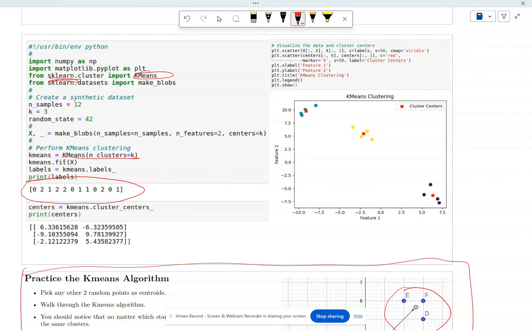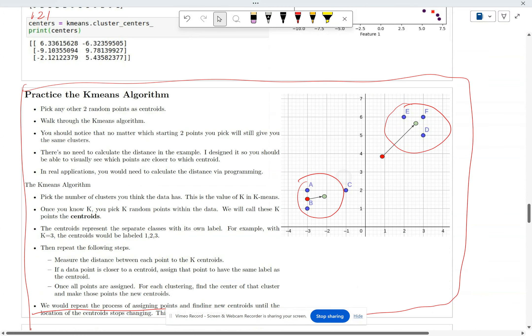How do you know how well you've done? Well, you can measure the accuracy. Compare this to the true label, 0, 2, 1, right? So you can measure the accuracy.